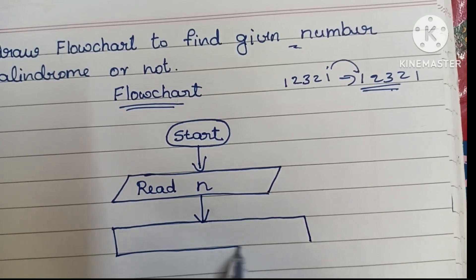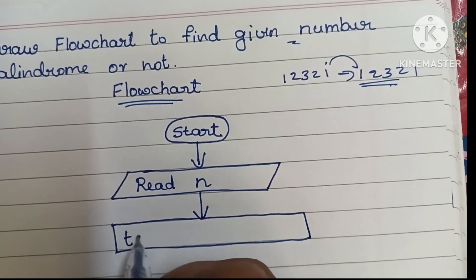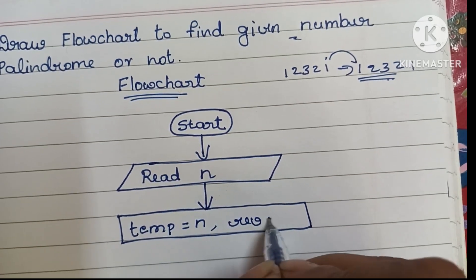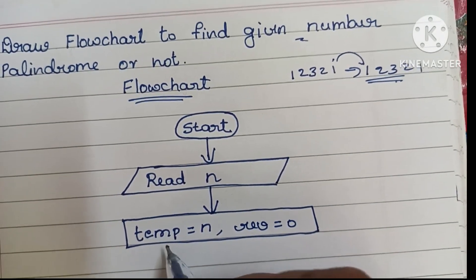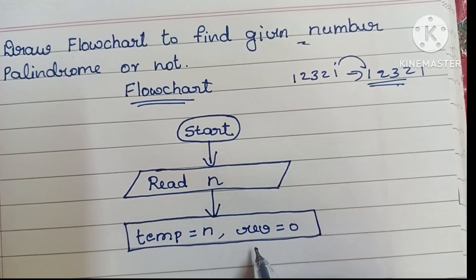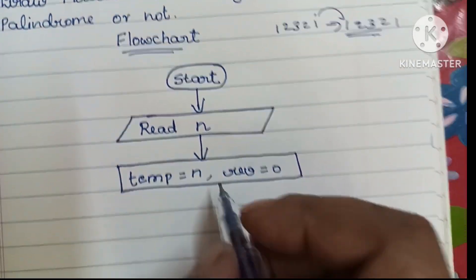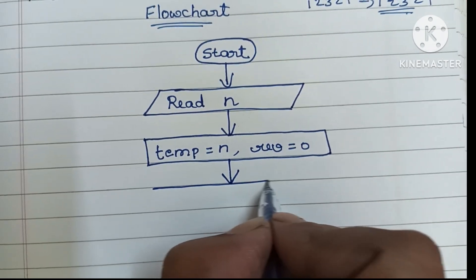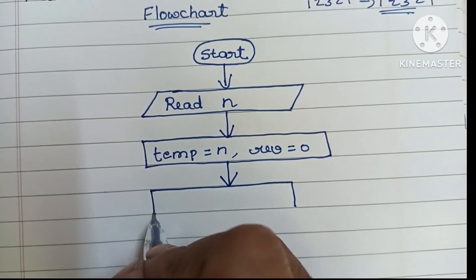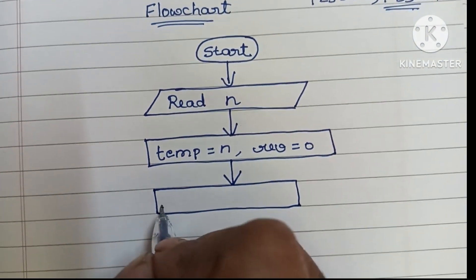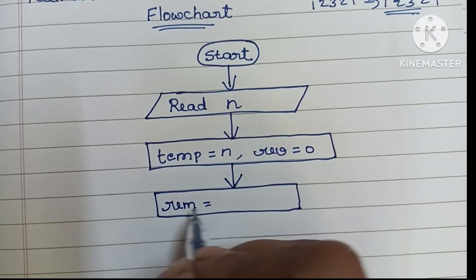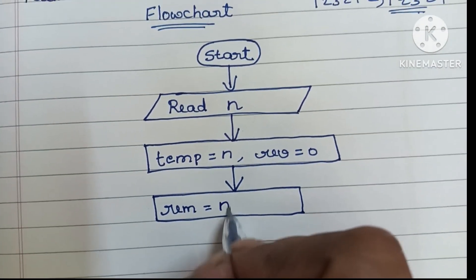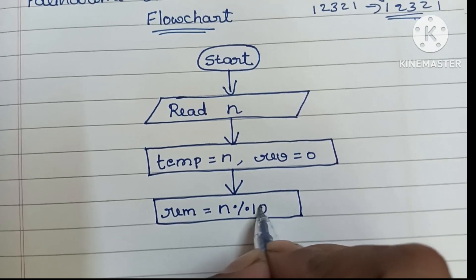The next step is to declare temp and reverse. Declaration is always done within a rectangular shape. We declare temp = n and reverse = 0. Initially, reverse is equal to zero. Next, we start the calculation.